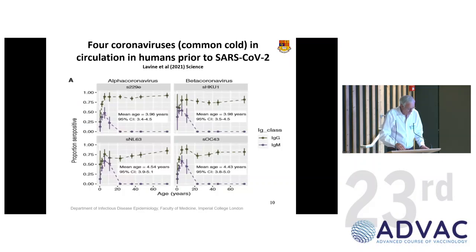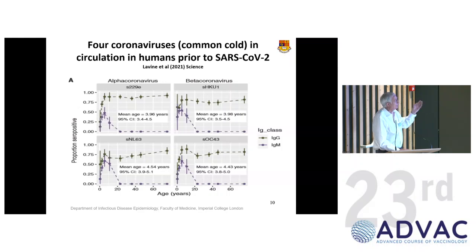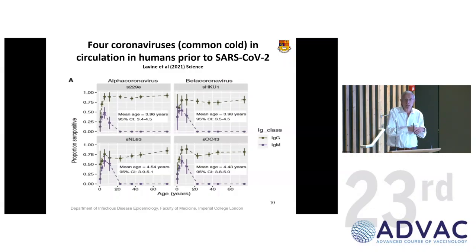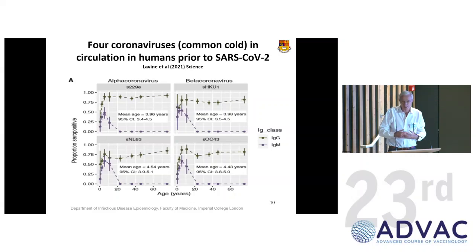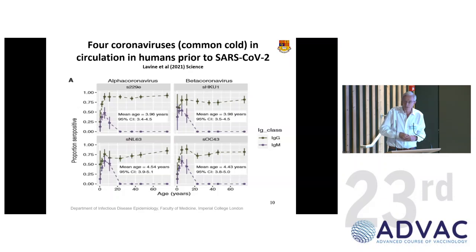With evolution, if you take the coronaviruses before the recent one — this is excellent data from a recent publication in Science from a detailed longitudinal study in Kenya near Kilifi — it shows the alpha and beta coronaviruses. Looking at serology through IgG and IgM classes, with these old coronaviruses everybody got them young, were seropositive, and the incidence of real disease in adults was very low. This raises the question of what the future is for SARS-CoV-2.